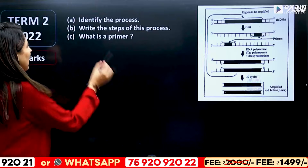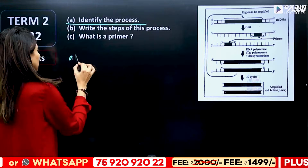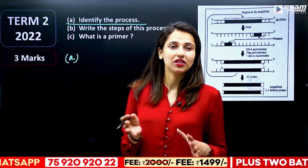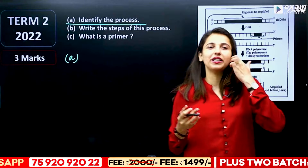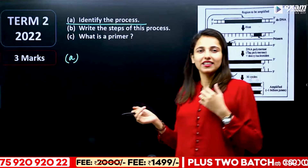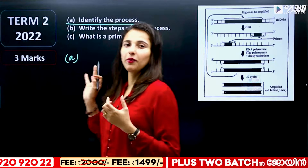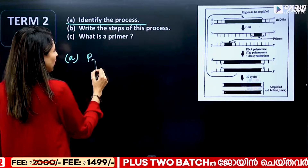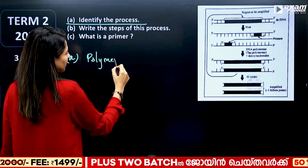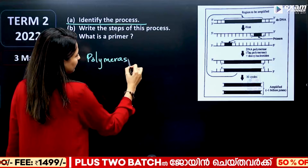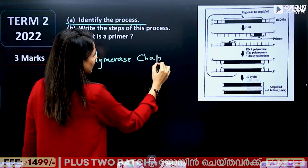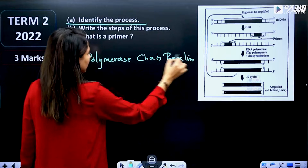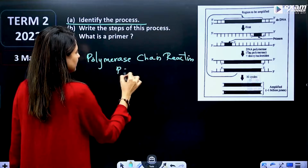Identify the process. If we separate DNA from DNA, that is the recombinant DNA technology process. This is an important technique — Polymerase Chain Reaction. We call it PCR.